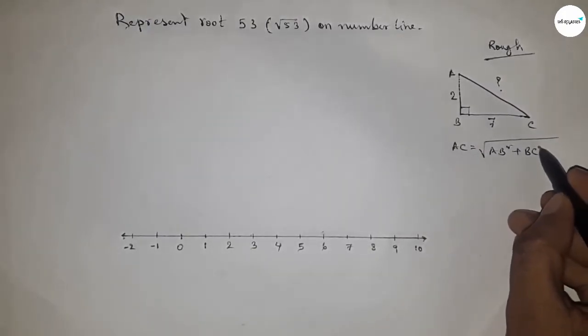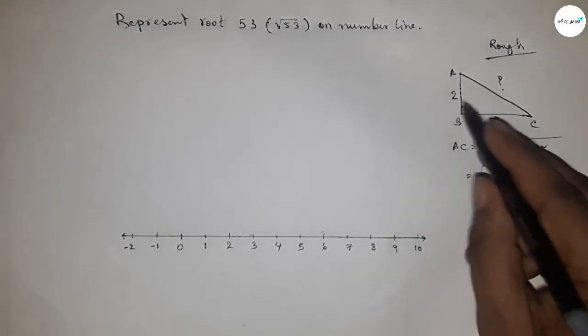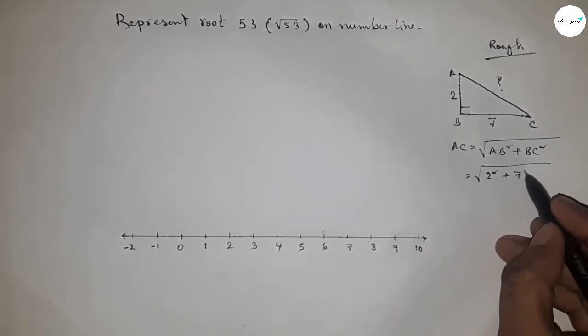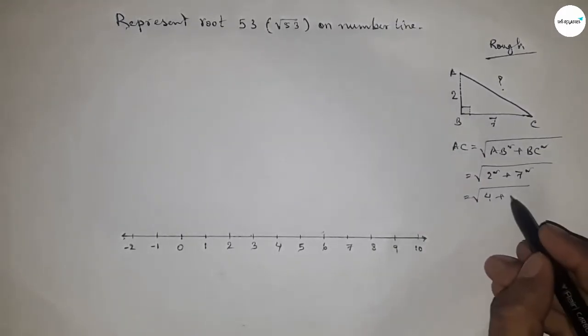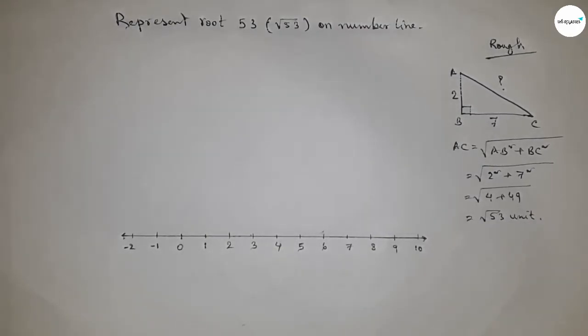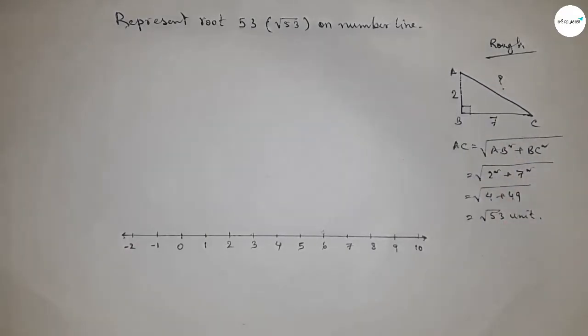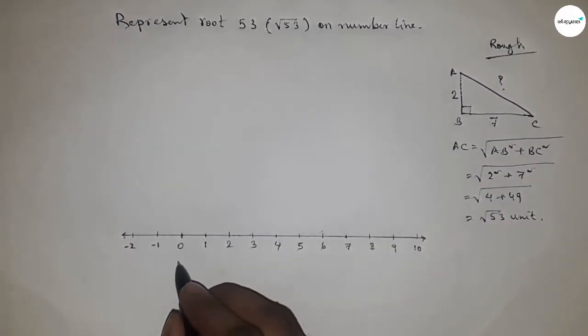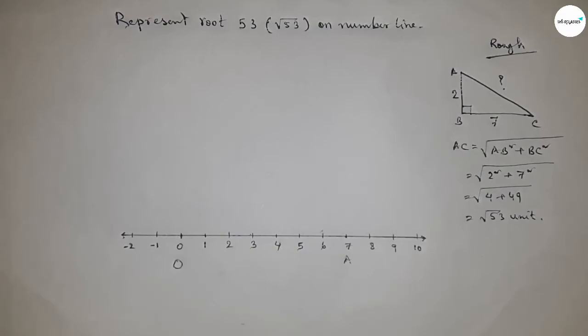So two square plus seven square. So this is 4 plus 49. So this is root 53 unit. Now this concept applying between 0 to 7. So taking O point and this is A point.